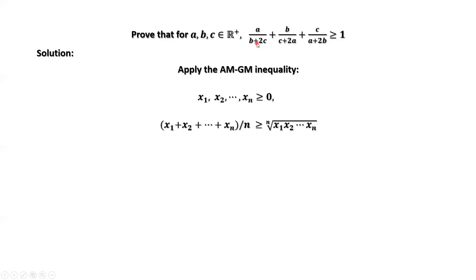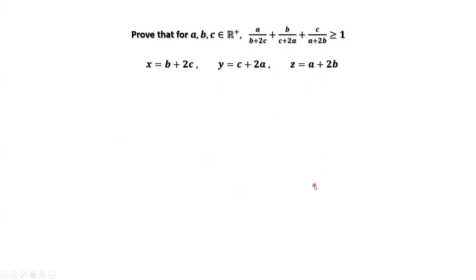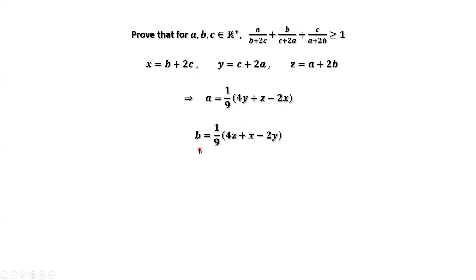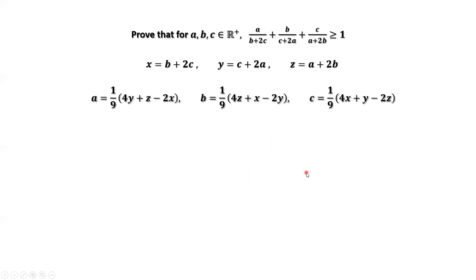We define the denominator of the first term in the left-hand side as X, the denominator of the second term as Y, and the denominator of the third term as Z. Using these three new variables, we find A, B, C in terms of X, Y, Z: A equals 1 over 9 times (4Y plus Z minus 2X), B equals 1 over 9 times (4Z plus X minus 2Y), C equals 1 over 9 times (4X plus Y minus 2Z).